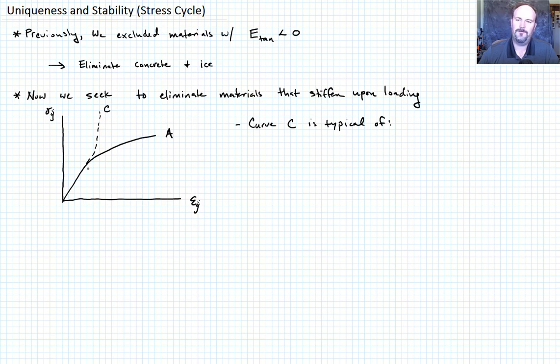So let's say that curve C is typical of a couple types of materials. Let's think about what that might be. What would cause a stiffening? The easiest way to think of it is something maybe is becoming denser as we apply a load to it. Think about porous materials that might have pore collapse or something like that.